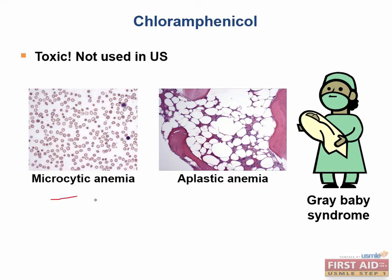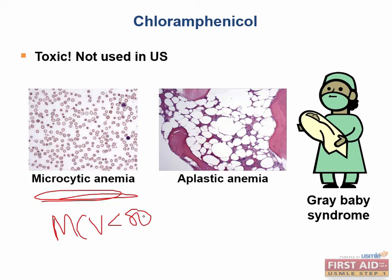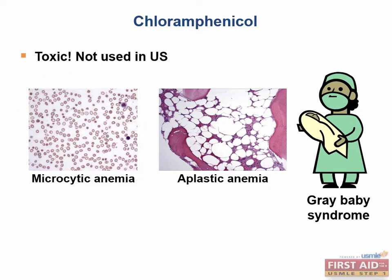Microcytic anemia is an anemia characterized by red blood cells with a mean corpuscular volume of less than 80. This image is very high yield and likely to appear on your board examination. You can identify microcytic anemia by an area of central pallor — the red blood cells have a white area in the middle — reflecting reduced hemoglobin production, which gives the cell its color.